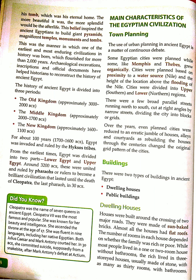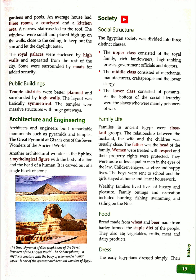Buildings were of two types: dwelling houses and public buildings, as also found in the Indus Valley civilization. Dwelling houses were made of sun-baked bricks with flat roofs. People lived in one or two rooms, without bathrooms. The rich lived in three-storied houses usually made of stone, some with courtyards, kitchen areas, and narrow staircases. Royal palace houses were enclosed by high walls and surrounded by moats for security.